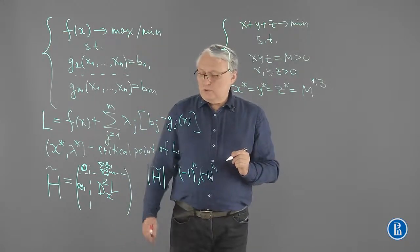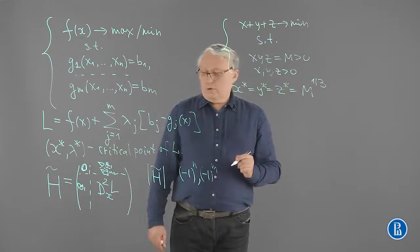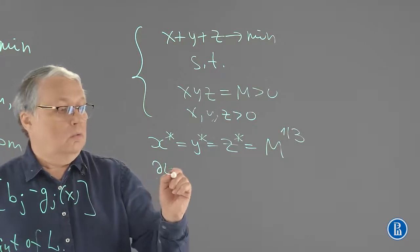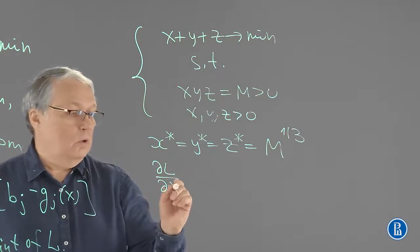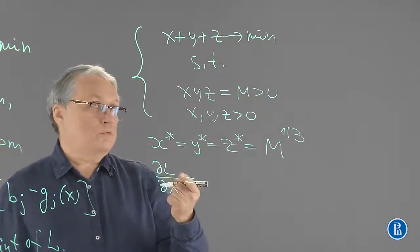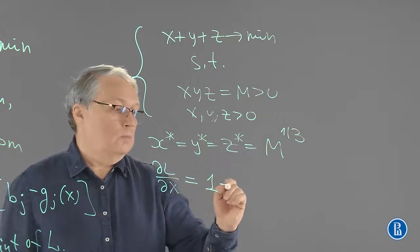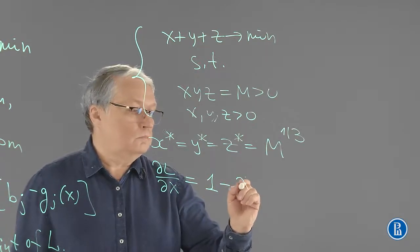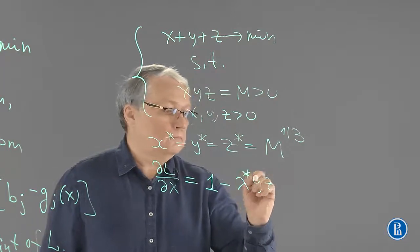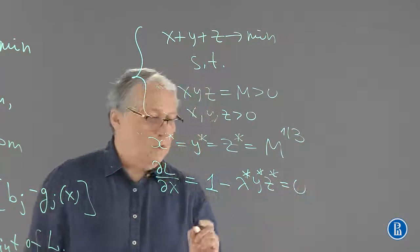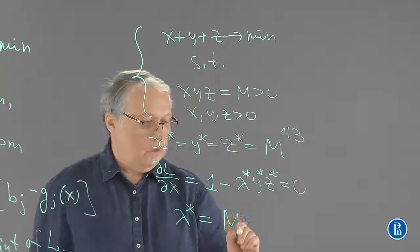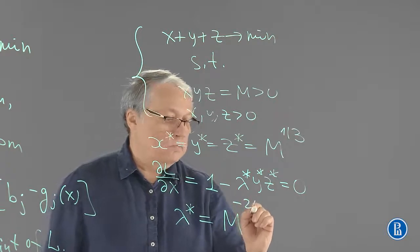We also will need, in order to evaluate the bordered Hessian, lambda star value. We can find the value if we restore one of the first-order conditions, for instance, the first one. Then we can find the lambda star value, which is m raised to the power of negative two-thirds.